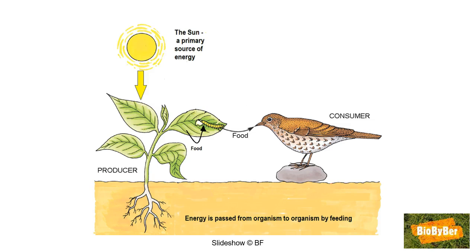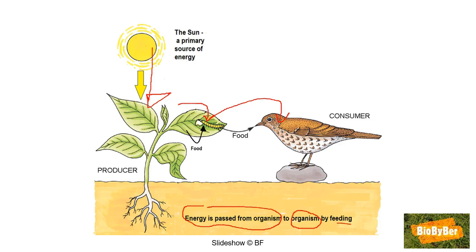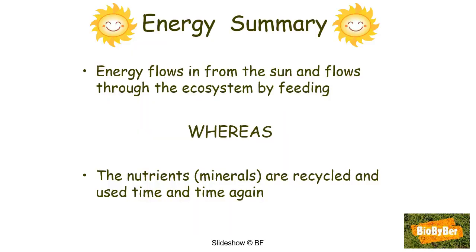When the Sun shines on a plant, the solar energy is changed into chemical energy in the food when the plant makes its own food in photosynthesis. This is an energy conversion where solar energy is converted into chemical energy. The chemical energy present in the plant is then passed on to other organisms when they eat the plant or feed on each other, passing energy along the food chain.